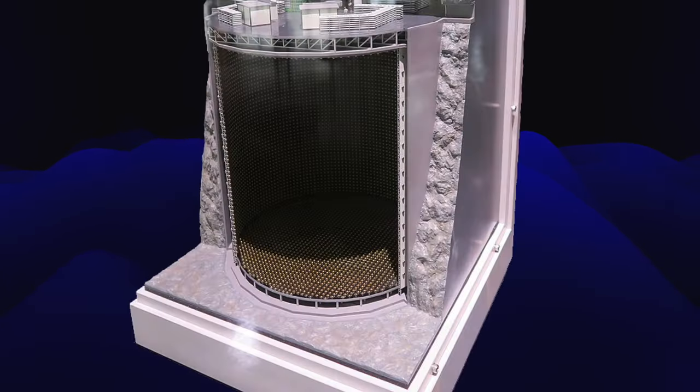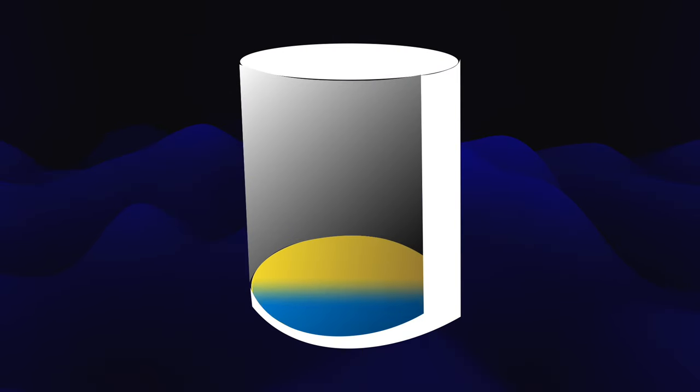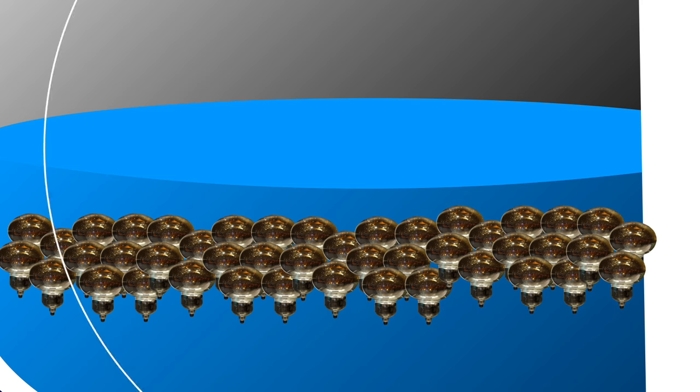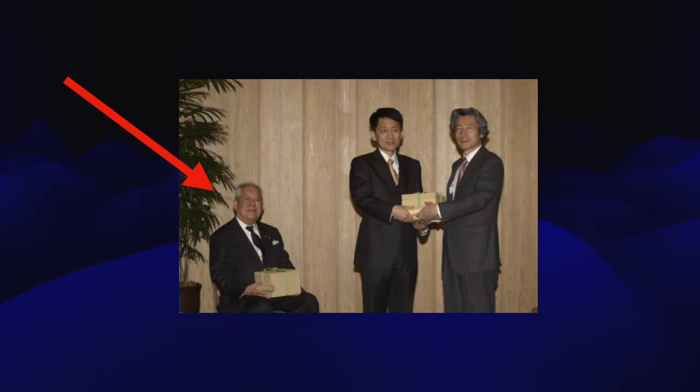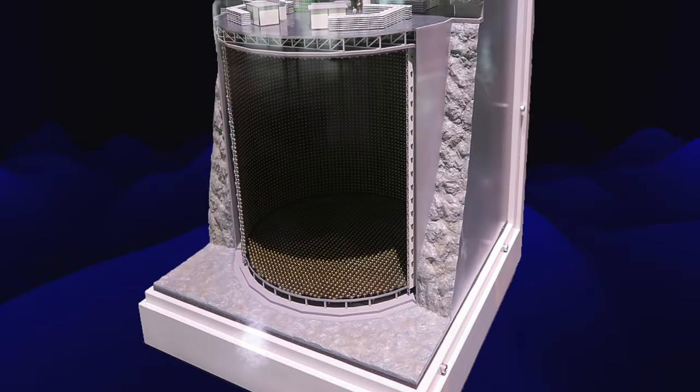The Super-Kamiokande was designed to be a much more sensitive detector due to its size and the number of photomultiplier tubes, or PMTs. The increased volume of water allowed for a greater chance of neutrino interactions, and the large number of PMTs provided comprehensive coverage to detect the faint Cherenkov radiation. Koshiba's pioneering work laid the foundation for the field of neutrino astronomy, and led to his receipt of the Nobel Prize in Physics in 2002. So how does this thing work, exactly?